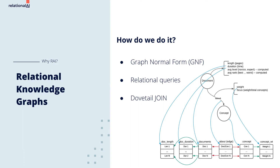Contrast this with navigational queries that hop from node to node to find relevant attributes. The relational approach eliminates the single-node versus all-node query distinctions in other graph databases. Relational queries against GNF use wide N-way joins, made efficient by RAI's dovetail join implementation.